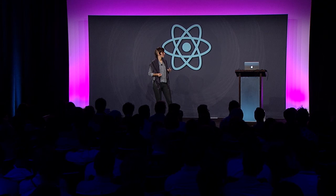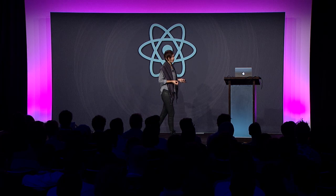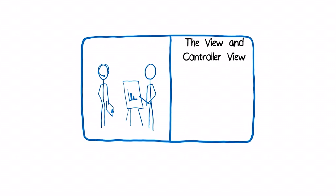That brings us to the view and the controller view — now sometimes called the presentational view and the container view. The presentational view is a presenter: props get passed to it, it doesn't really know anything about the system behind it, but it knows how to show those props to the user and create the HTML the user expects to see. The container view has a bit more of a picture of what's going on behind the scenes — it talks to the store, knows when the store gets updated, and acts as a middle manager between the store and the view below it.